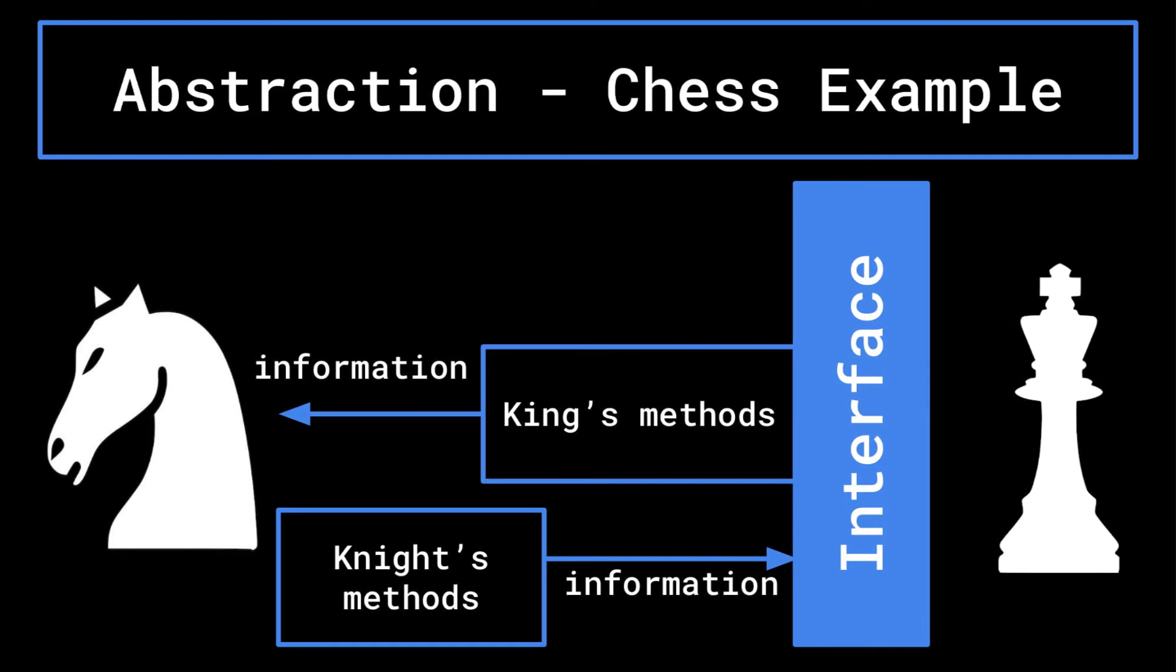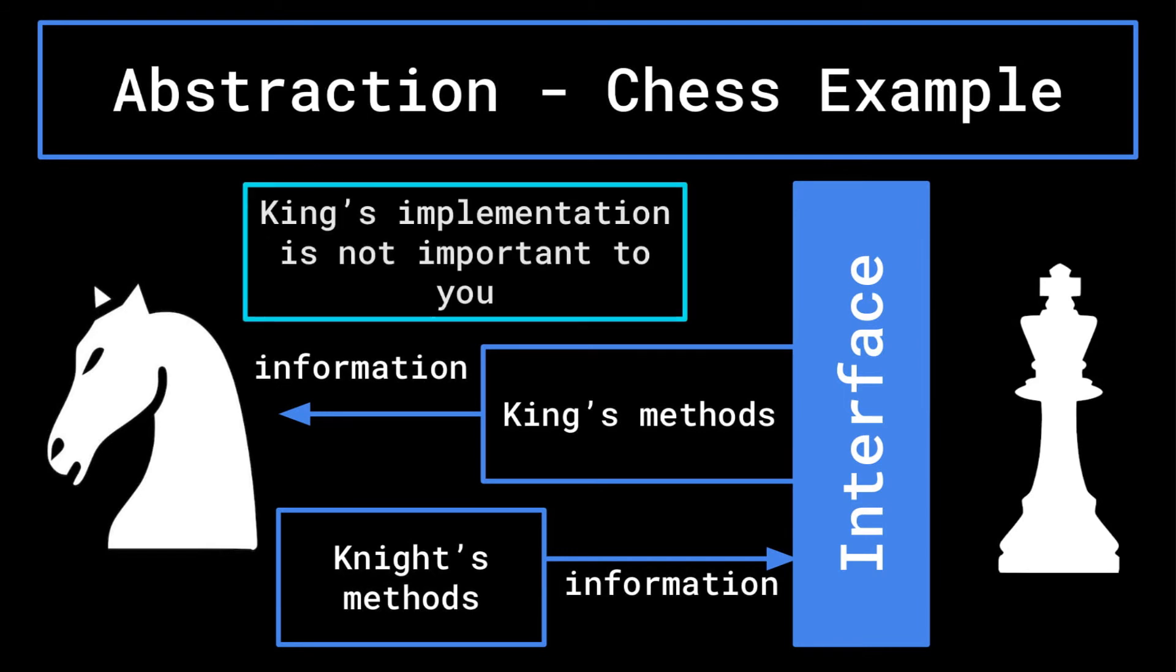As you program the knight class, you should not be concerned with how the king is determining whether or not it is in check. The king's method that communicates with the knight is part of the interface, but how exactly it determines whether or not it is in check is part of the implementation.